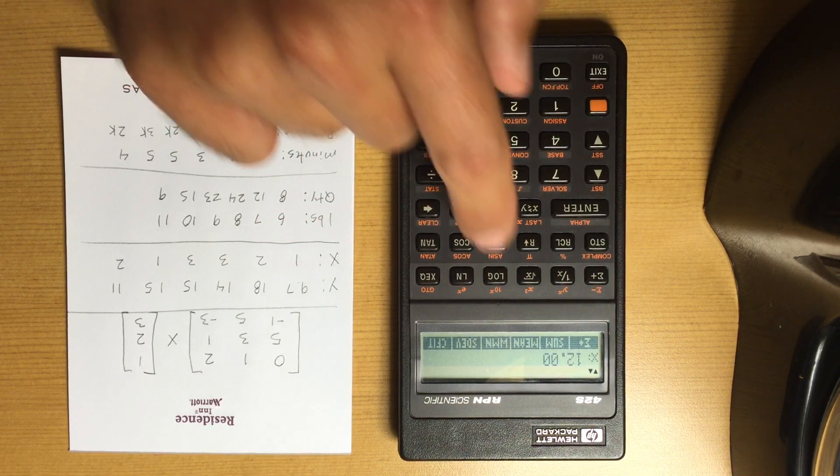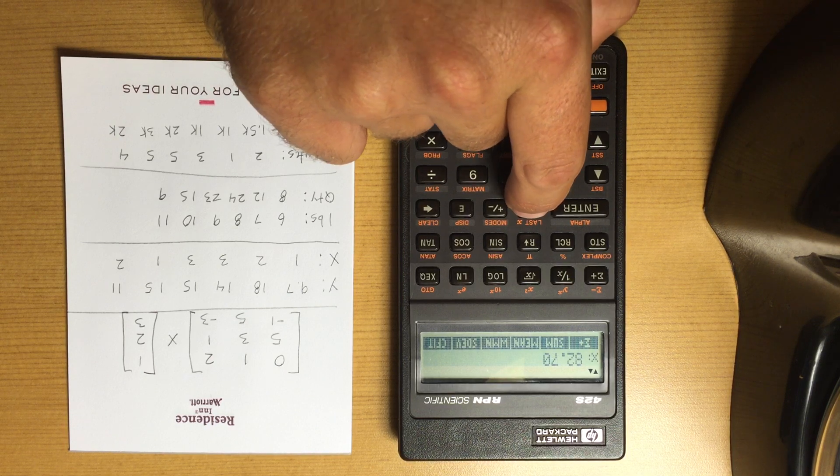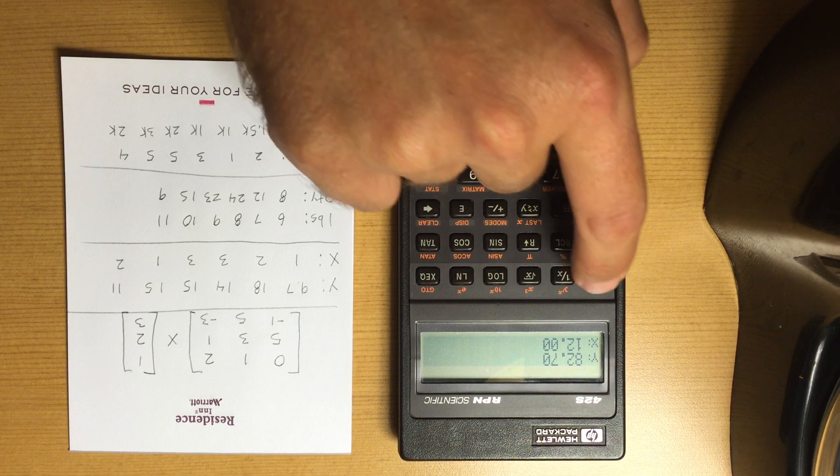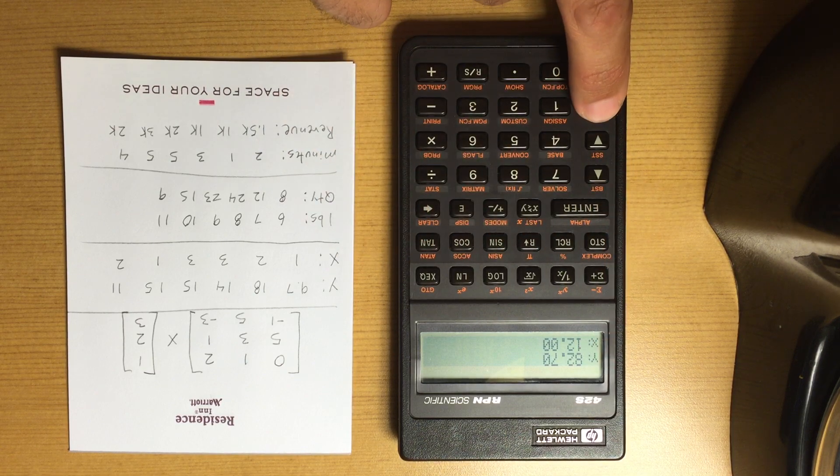You can't see it when you're on the stat menu, but you can use the X-Y swap to swap back and forth between those, or you can exit out and see X and Y values. So that's the sum.